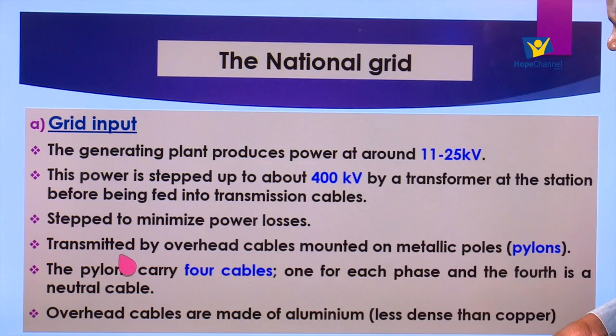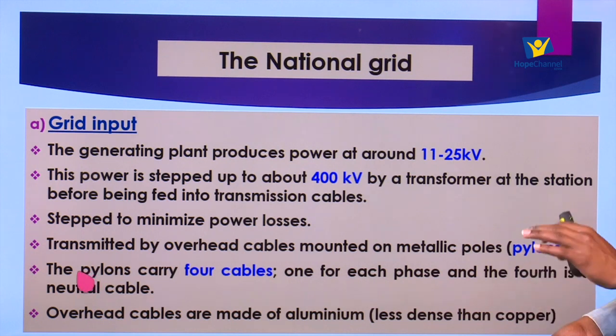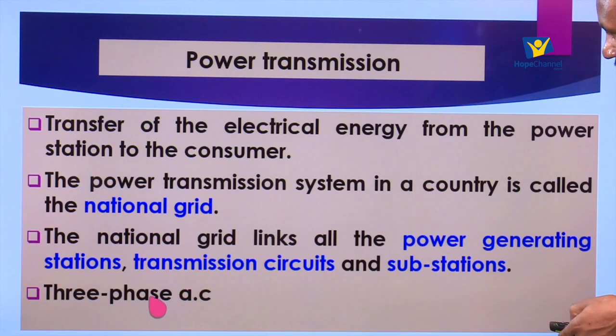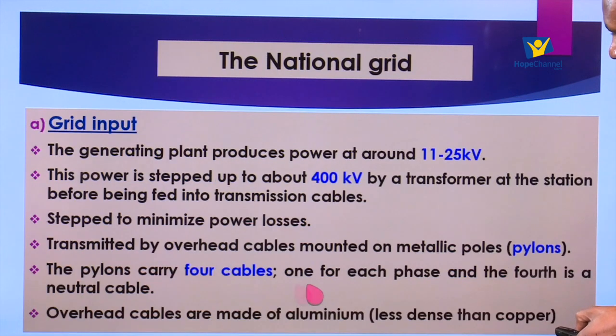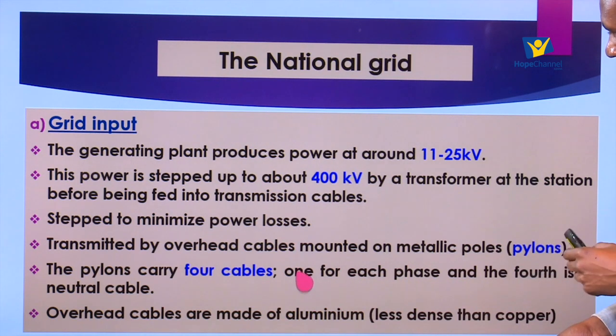The power is transmitted by overhead cables mounted on metallic poles known as pylons. The pylons carry four cables: one for each of the three phases, and the fourth is a neutral cable. The power is transmitted in three-phase AC, so each phase is carried on its own cable and the fourth cable is a neutral cable.